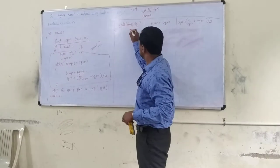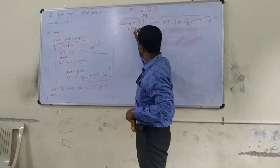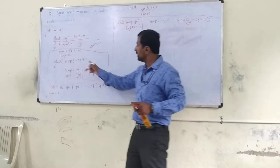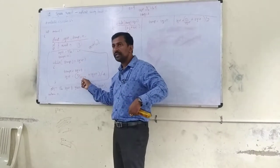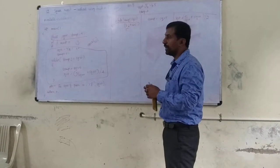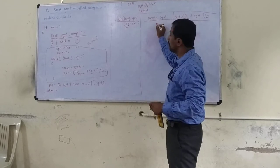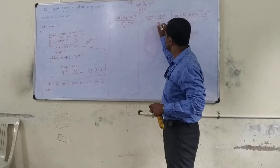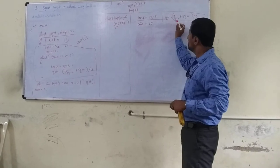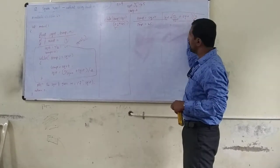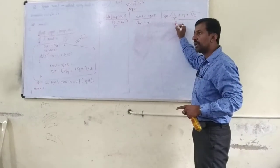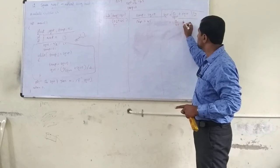First time the condition is true, so these two statements will execute. First statement: temp = sqrt. What is the sqrt value? 4.5 — it is assigned to temp. First statement over. Second statement: sqrt = (n / sqrt + sqrt) / 2. Substituting values: n is 9, so (9/4.5 + 4.5) / 2. First divide: 9/4.5 = 2. Then 2 + 4.5 = 6.5. Divided by 2 gives 3.25. So 3.25 is assigned to sqrt.